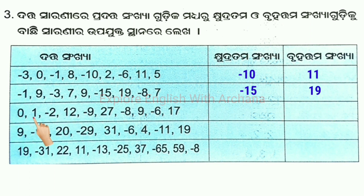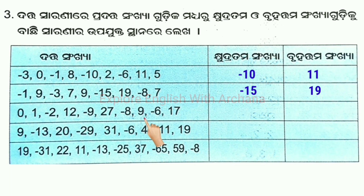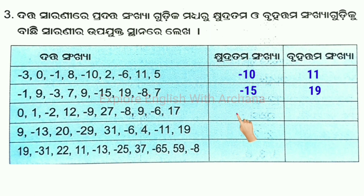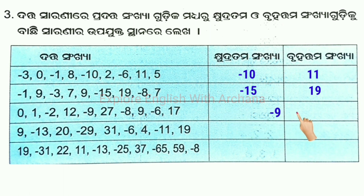0, 1, minus 2, 12, minus 9, 27, minus 8, 9, minus 6, 17. From these numbers, the smallest is minus 9 and the largest is 27.